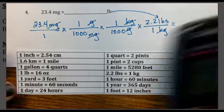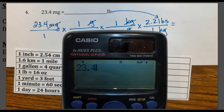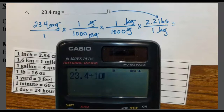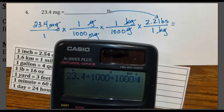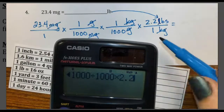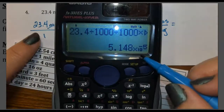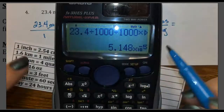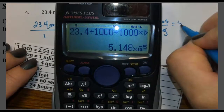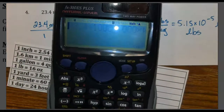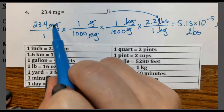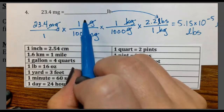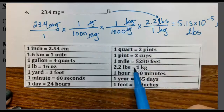Type into the calculator: 23.4 times 1 divided by 1,000, times 1 divided by 1,000, times 2.2, which gives 5.148 times 10 to the negative 5. Rounding to 3 significant figures gives 5.15 times 10 to the negative 5 pounds. This is the hardest type of problem on your test. Notice we had a metric unit, went to the base, then moved to kilograms specifically to use the conversion factor 1 kilogram equals 2.2 pounds.